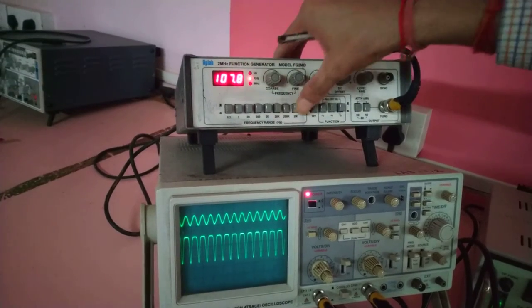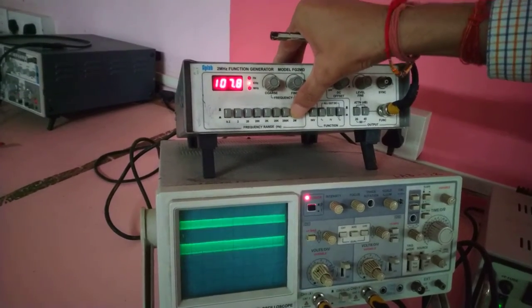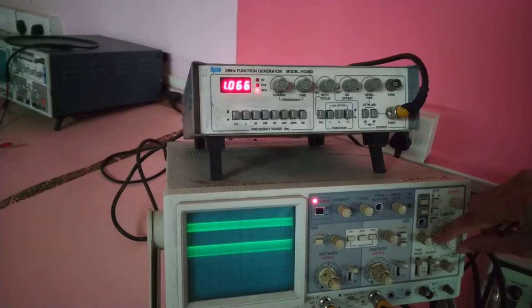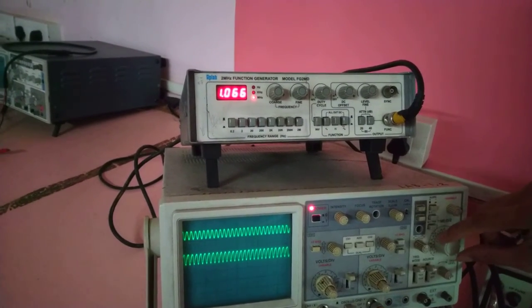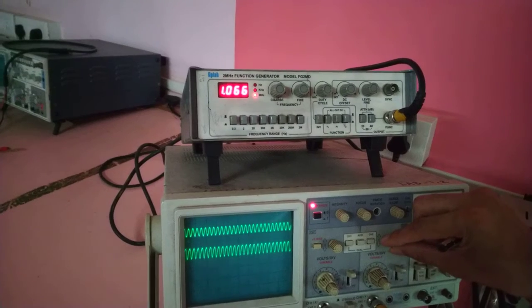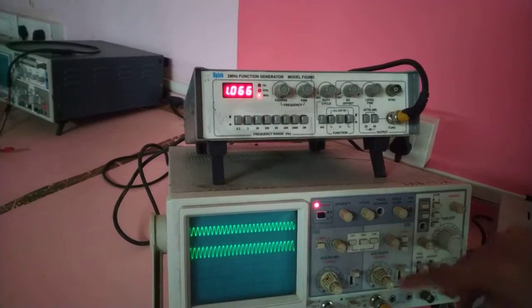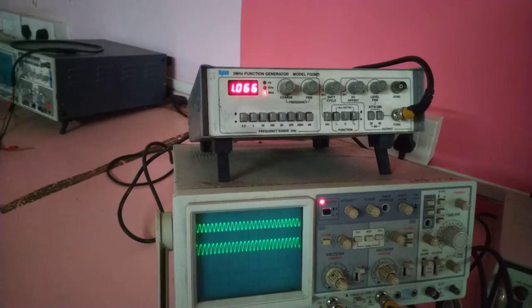Then in megahertz, this is approximately 1 megahertz frequency given. Output is about 1 division and 1 division is 1000 millivolt.